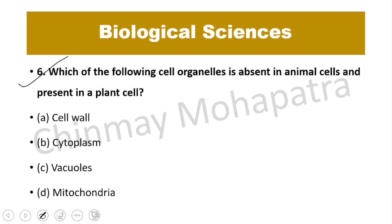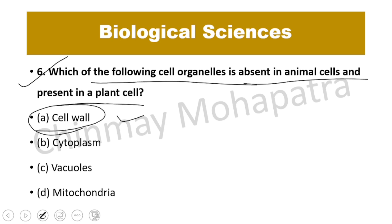Question number 6: Which cell organelle is absent in animal cells but present in plant cells? The right answer is cell wall. Cell wall is present in plant cells but not in animal cells. Vacuoles are present in both, though vacuoles in animal cells are smaller in size compared to those in plant cells.